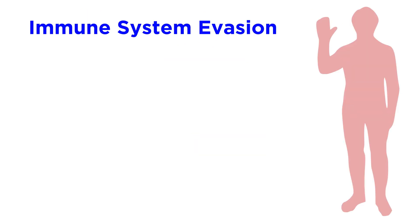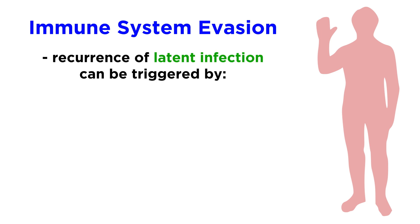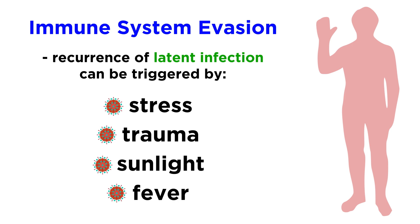HSV has evolved complicated mechanisms to escape the immune system. When it comes to latent infection, things like stress, trauma, sunlight, or fever can trigger a recurrence, causing the virus to replicate within a nerve cell all over again. Interestingly, latency and recurrence can vary quite a bit between people — for example, some people may never experience symptoms during recurrence, but can still spread the virus to others.